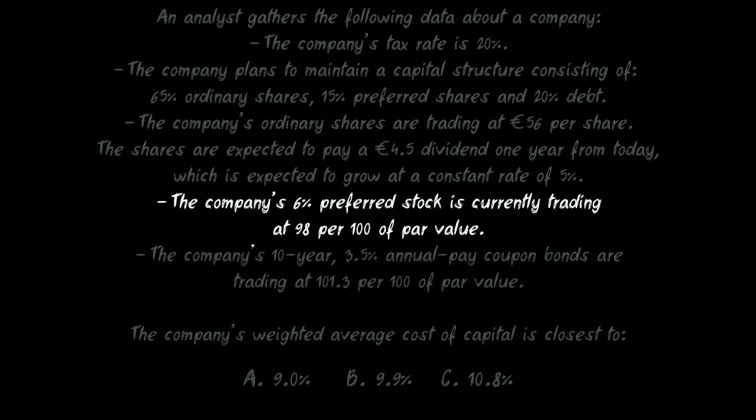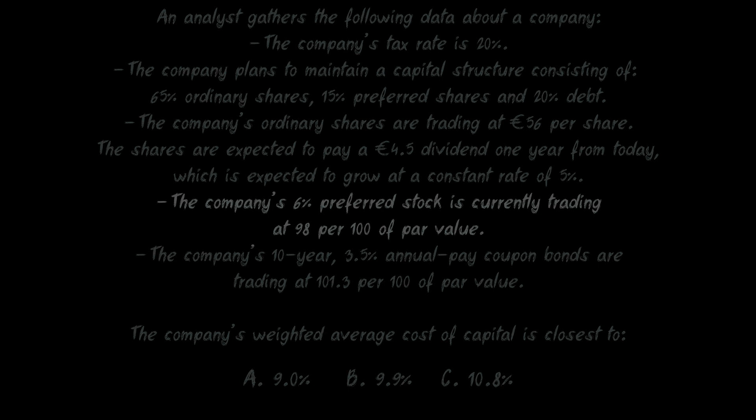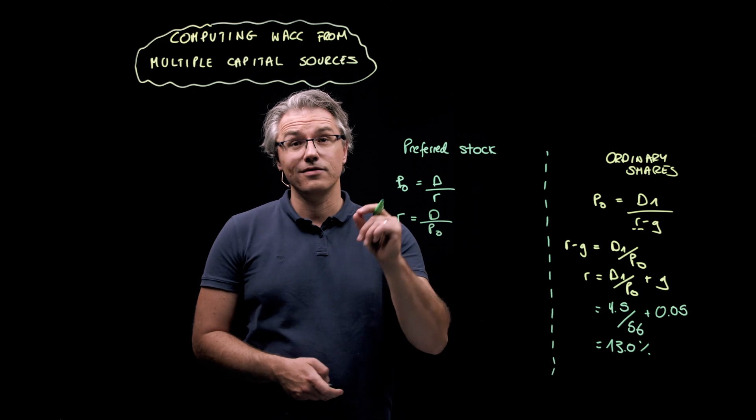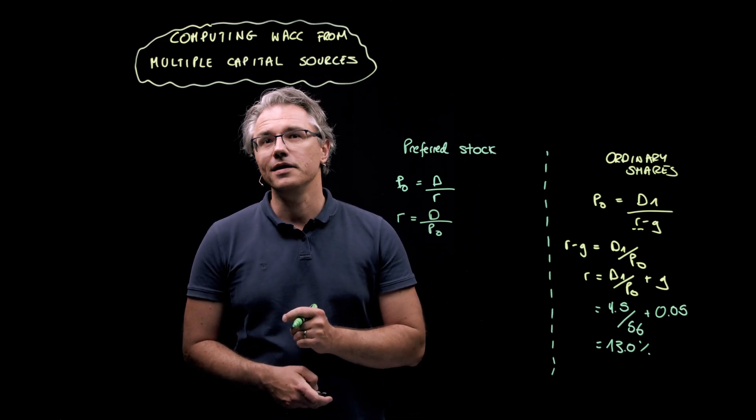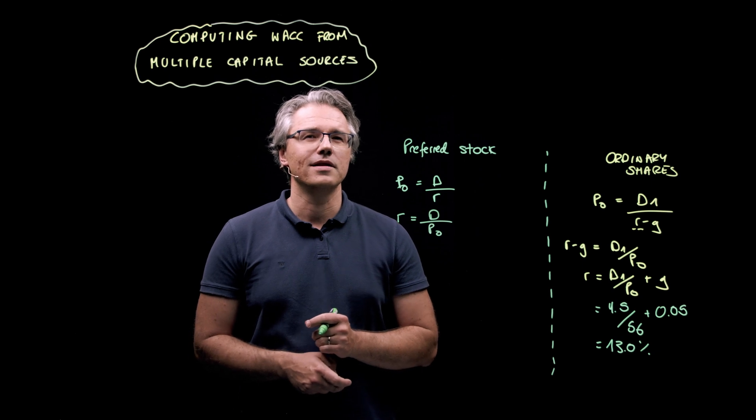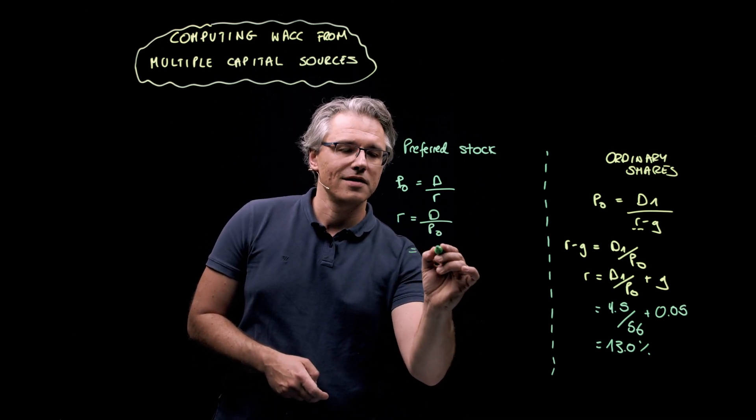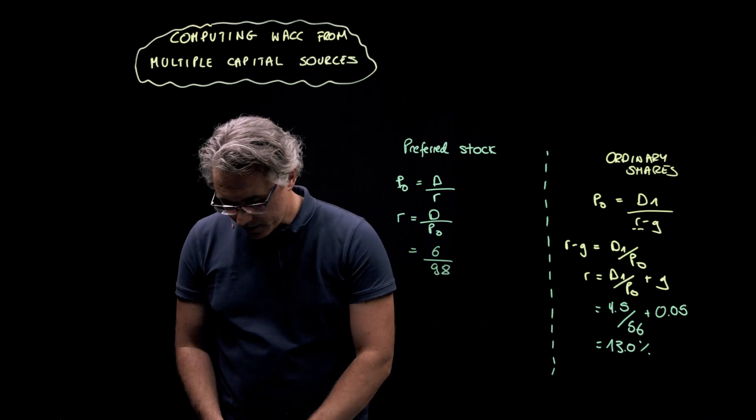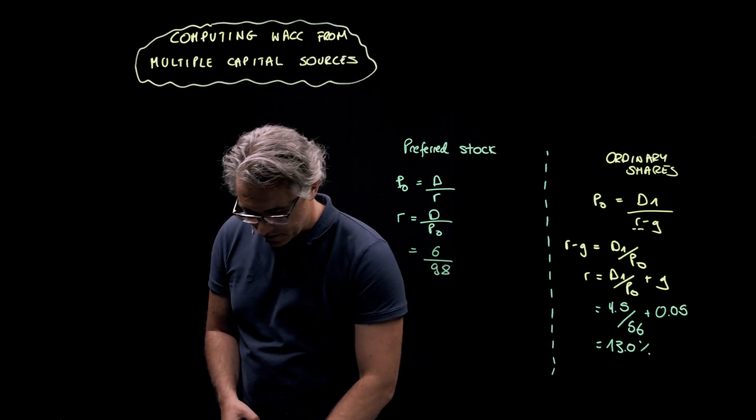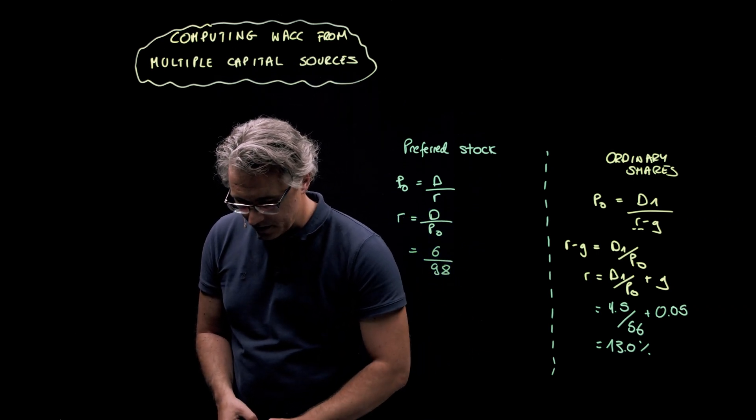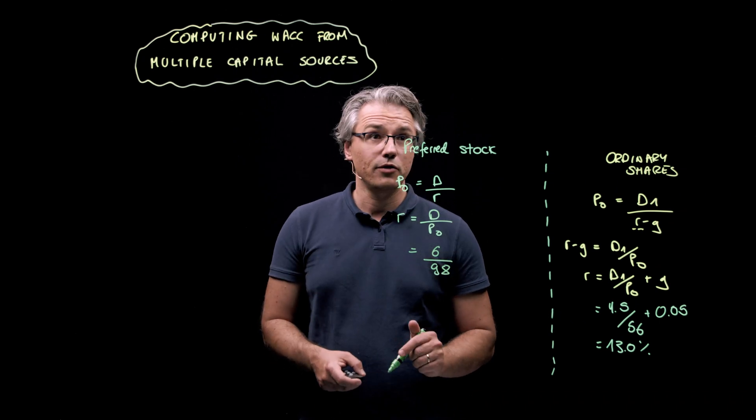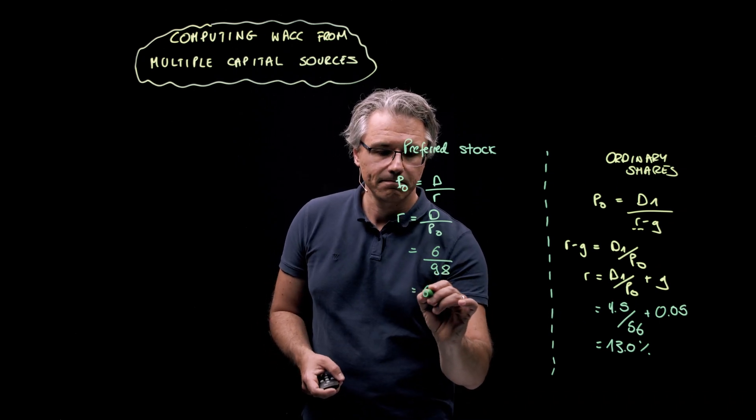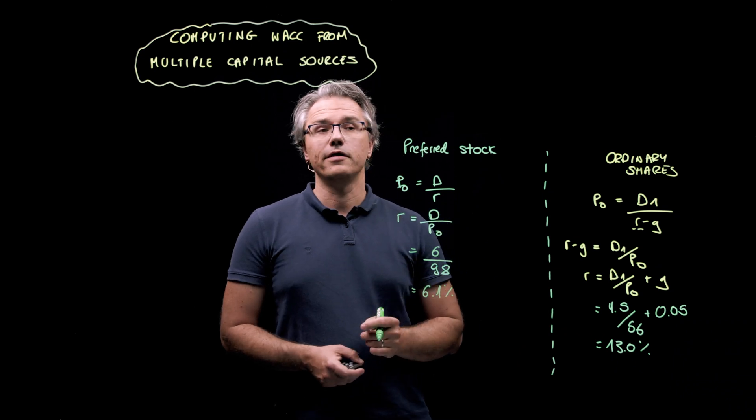Let's check the scenario. The company's 6% preferred stock is currently trading at 98 per 100 of par value. So, the dividend rate is set at a constant 6% of 100, i.e. 6, and the share price is 98. So, let me write this down: 6 over 98. And if we do this on the calculator, 6 divided by 98 gives a result of roughly 6.1%. And this is the cost of preferred stock.